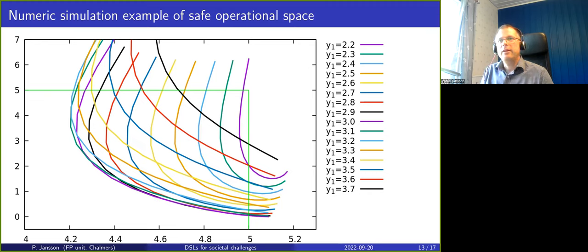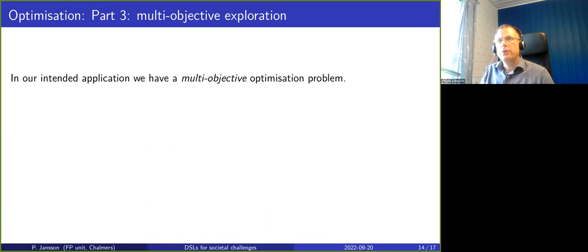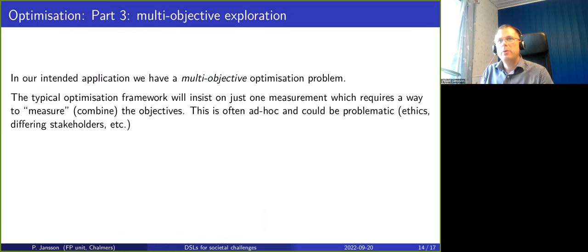It's really, we can get rather different optimal points depending on what we actually want to optimize for. It's a multi-objective optimization problem, and typically if we take an off-the-shelf optimizing framework it will insist on just having one measurement.